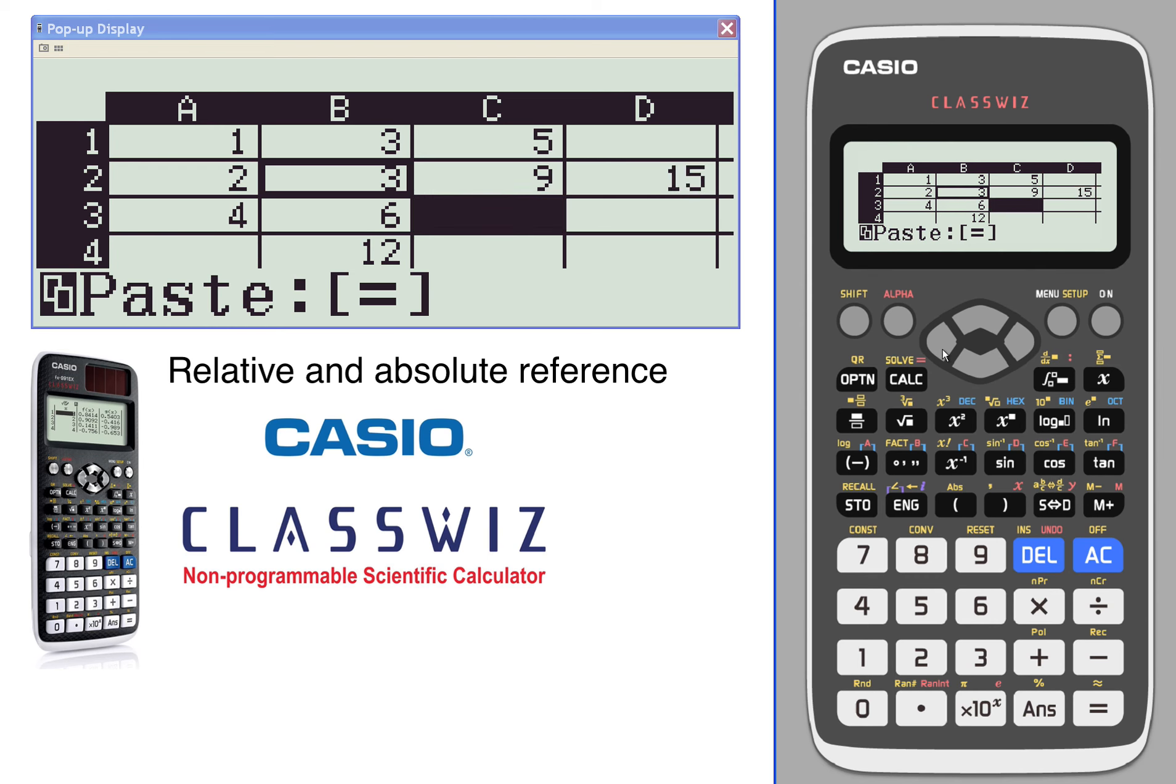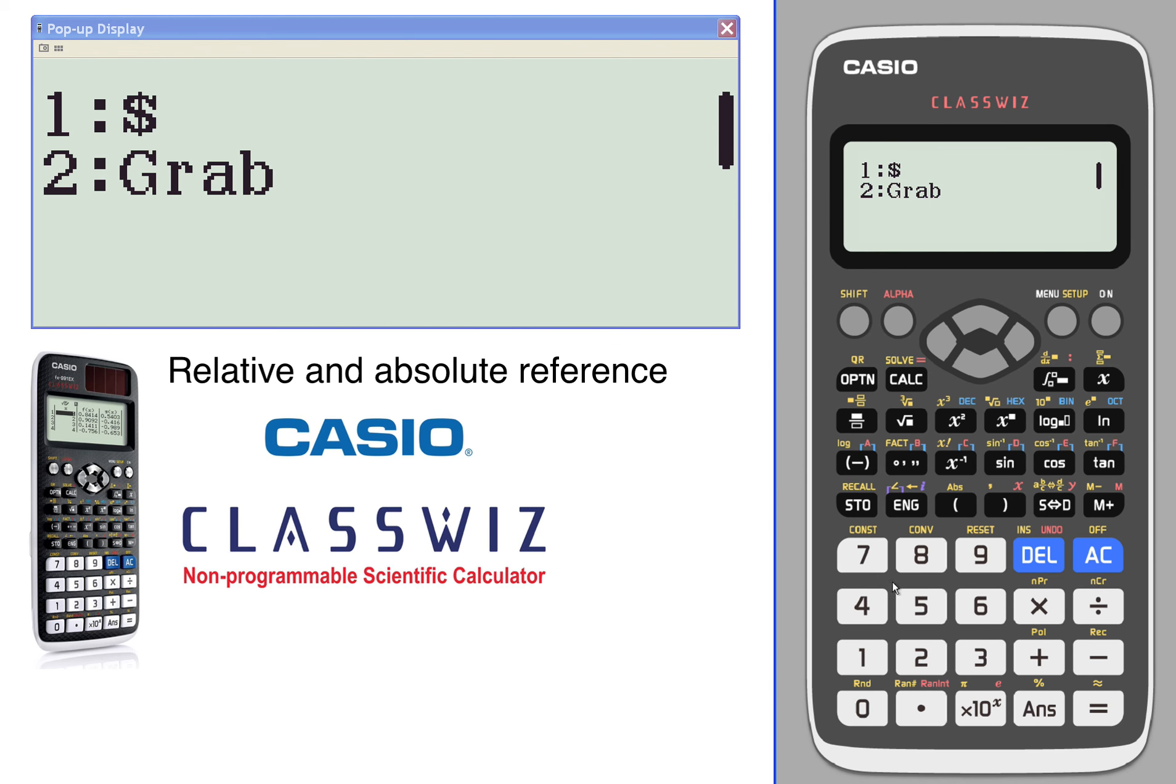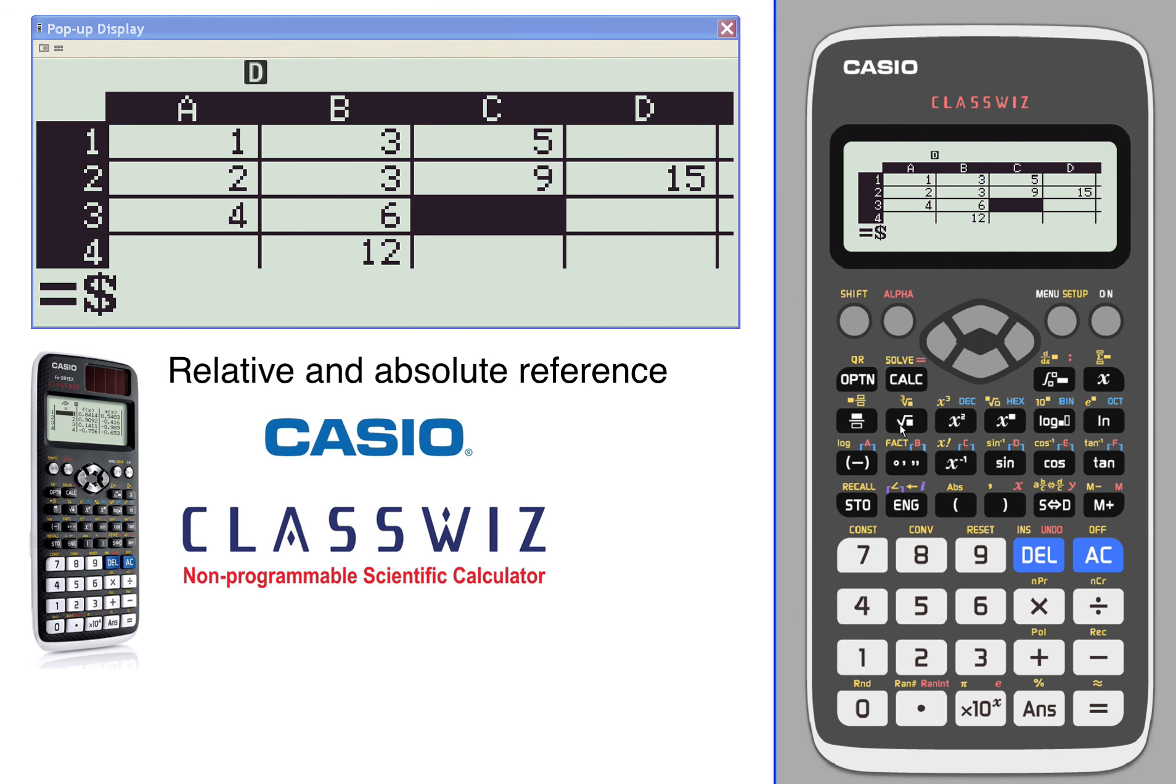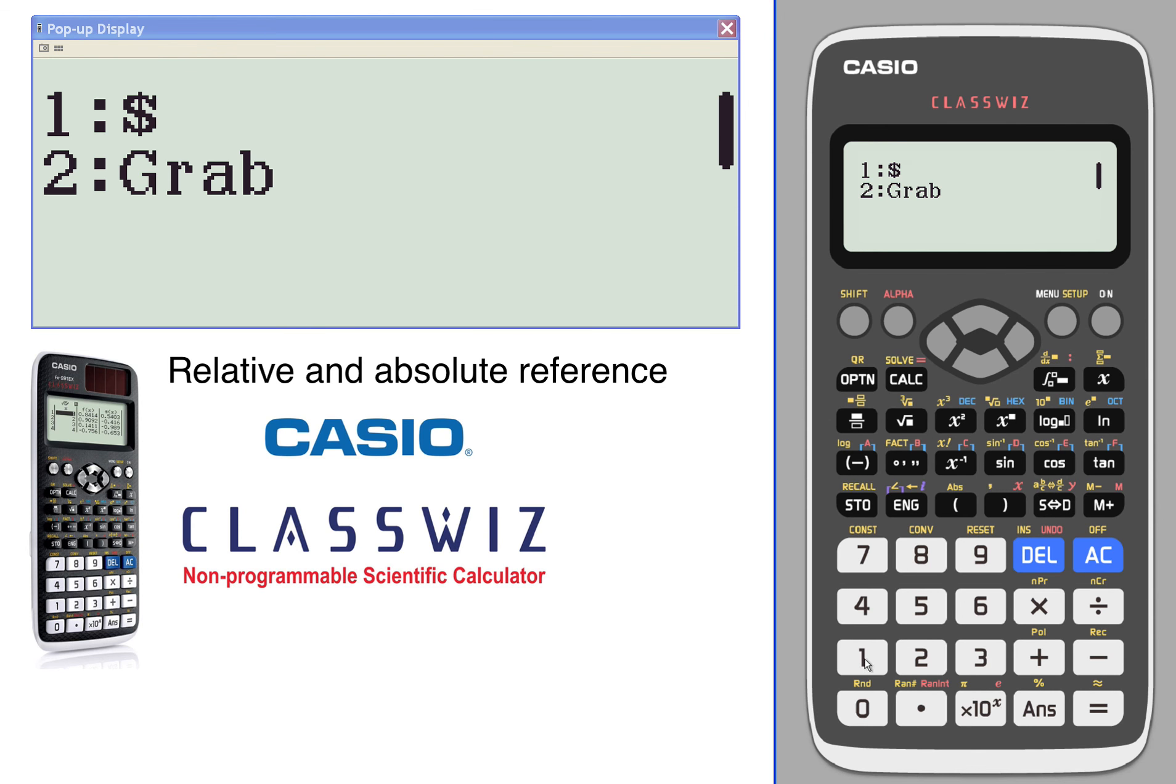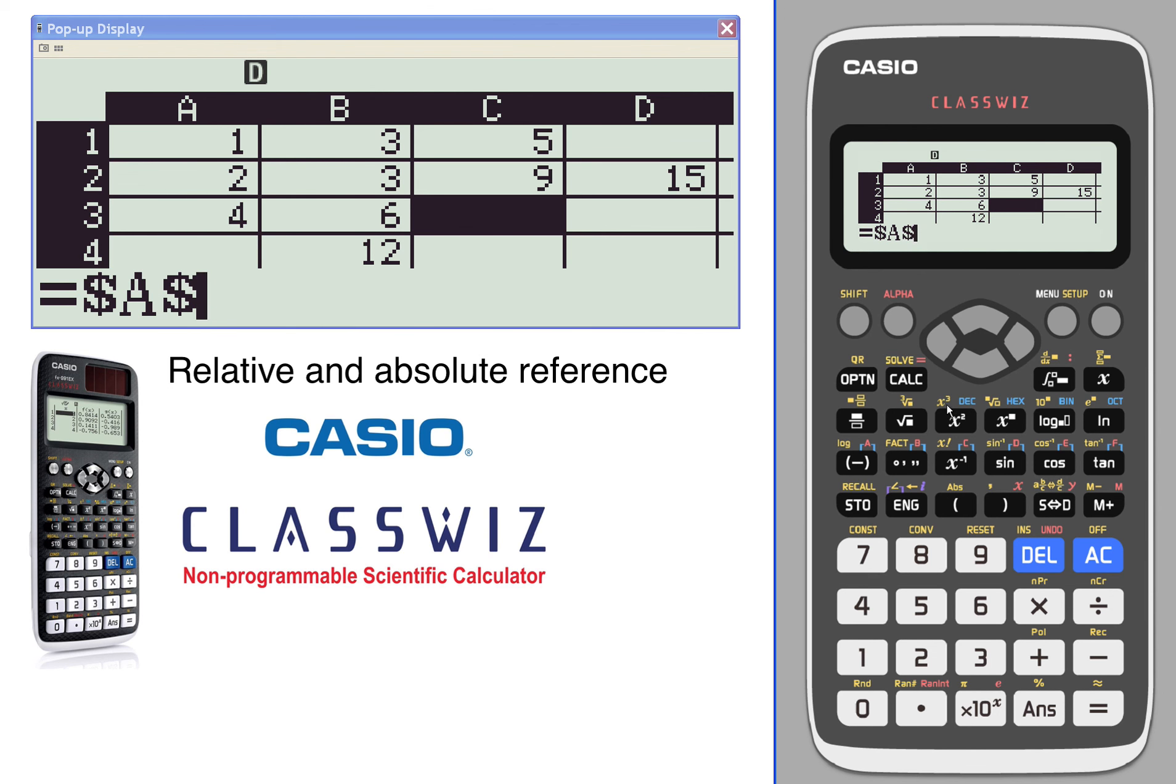Finally, the last one is the absolute reference - absolute row and column. This is only going to look at one place. So here we're gonna go equals, start out with dollar sign A dollar sign 1. That is gonna grab only what is in A1, and we'll multiply that by 5.